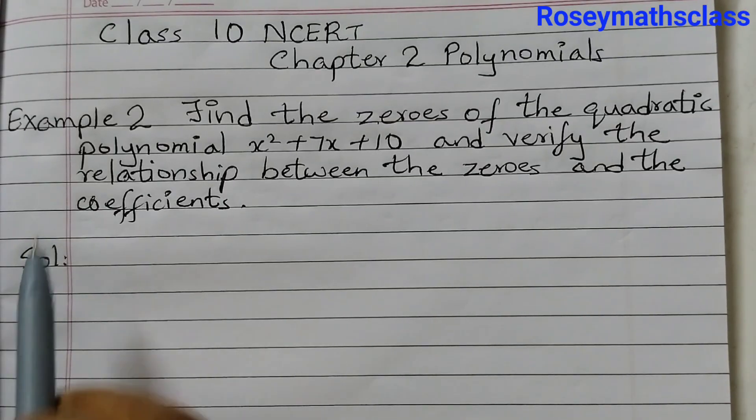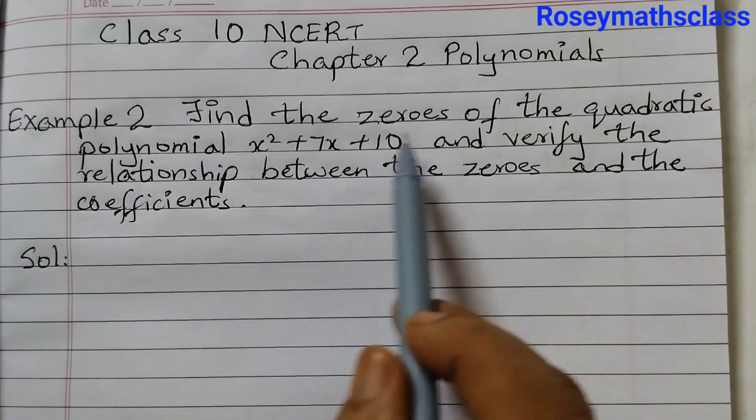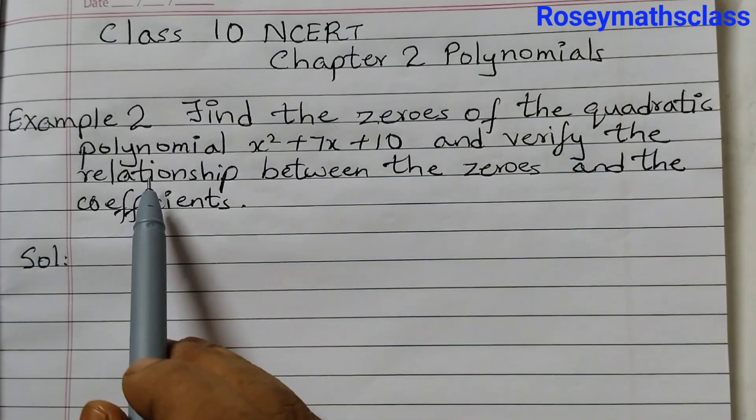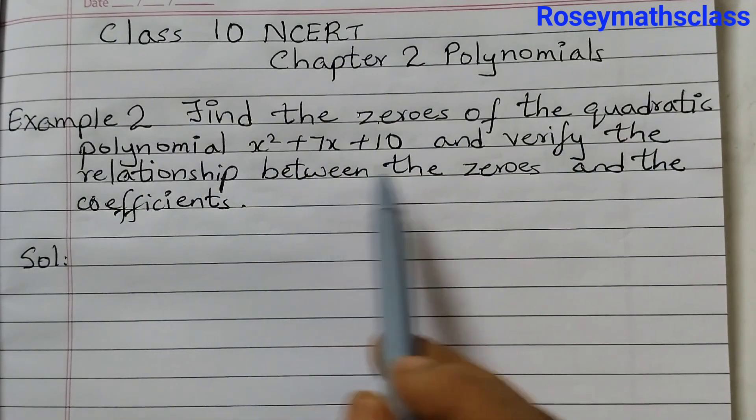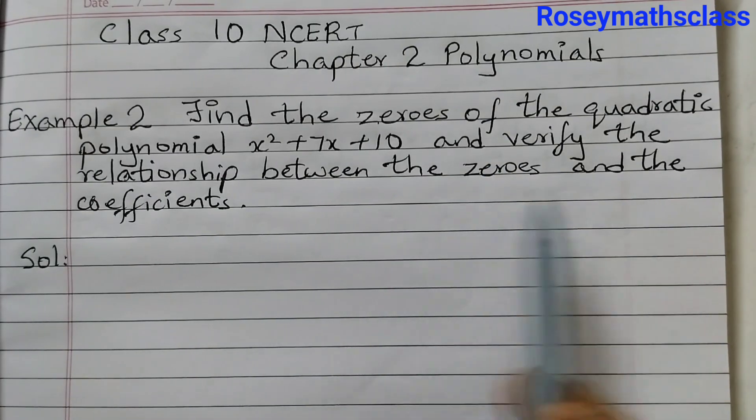Hello students, in this video we shall discuss example number 2 of chapter 2 polynomials. Find the zeros of the quadratic polynomial x squared plus 7x plus 10 and verify the relationship between the zeros and the coefficients.